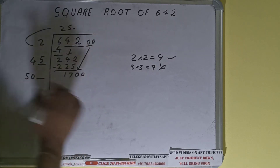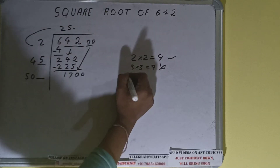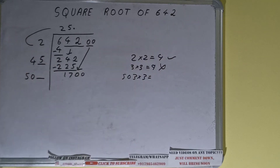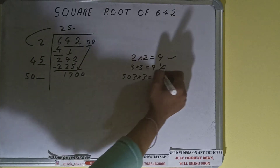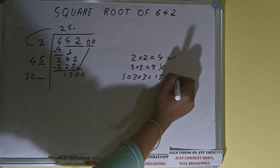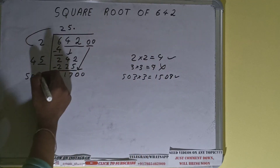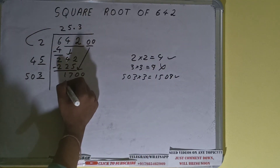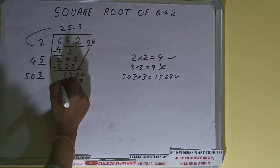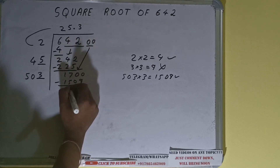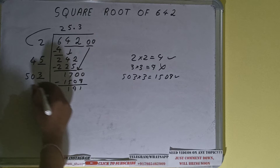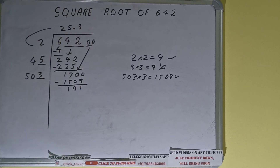Now we can try 3 times — compare 50 with 17. We can try 3 times: 503 into 3 will be 1509. That is good to take, so 3 here and 3 here. Subtract 1509 and 191 will be left.